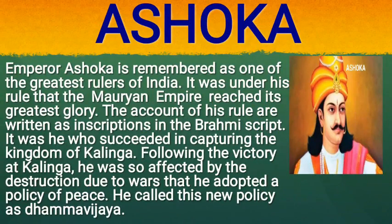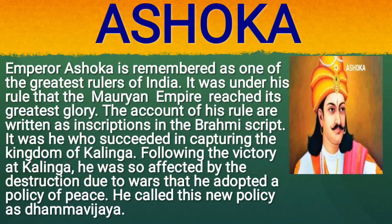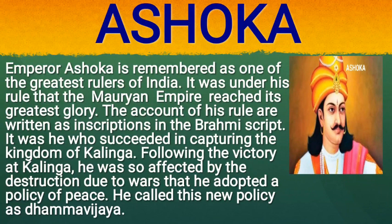Emperor Ashoka is remembered as one of the greatest rulers of India. It was under his rule that the Mauryan Empire reached its greatest glory. The accounts of his rule are written as inscriptions in the Brahmi script. It was he who succeeded in capturing the kingdom of Kalinga. Following the victory at Kalinga, he was so affected by the destruction due to wars that he adopted a policy of peace. He called this new policy Dhamma Vijay.